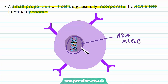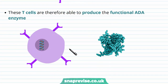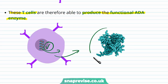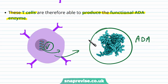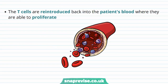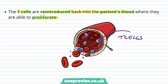The healthy ADA allele is now incorporated into the T cell's DNA, and all DNA is found in every nucleus of every cell in the body. The T cells that have taken up that allele are able to produce the functional ADA enzyme — the faulty version has been replaced with a healthy one. When they transcribe and translate this, they make the protein ADA, which means the immune system can then work. Those T cells are reintroduced back into the patient's blood and are able to proliferate, becoming a massive population so that all T cells can make ADA.